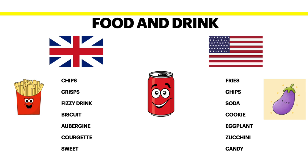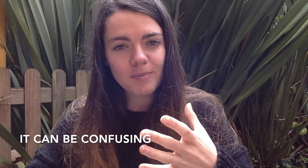Chips in the UK are what are known as fries in the US, whereas chips in the US are crisps — the ones you get from a packet, like Margarita here in Colombia. In the US, the word soda is used but we call it a fizzy drink in the UK. In the UK we have a biscuit, which is known as a cookie in the US. Sweets in general are known as candy or candies in the US. It can be quite confusing when we have the same word for two different things — for example, chips.